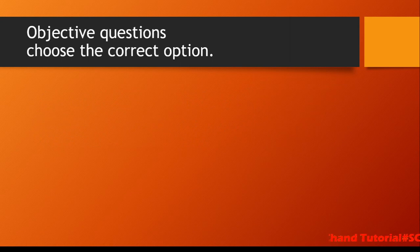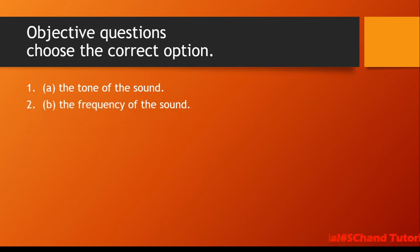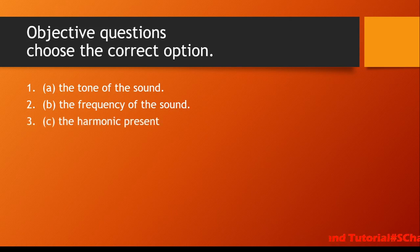Now the objective type questions — choose the correct option. First: the intensity of sound at a point does not depend on — the answer is the tone of the sound. Second: the pitch of the sound depends on — it depends on the frequency of the sound. Third: the tone of sound depends on the harmonics present.